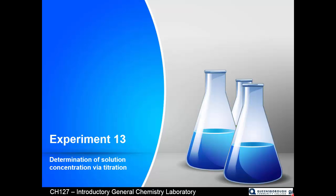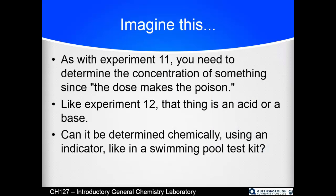Just like in experiment 11 when we did it spectrophotometrically, we need to determine the concentration of something because oftentimes the dose makes the poison. And like in experiment 12 where we found the pH of acids and bases, the thing we're finding the concentration of in this lab is an acid or a base. It can be determined chemically using an indicator — just like we would do when testing chemical levels in a swimming pool.